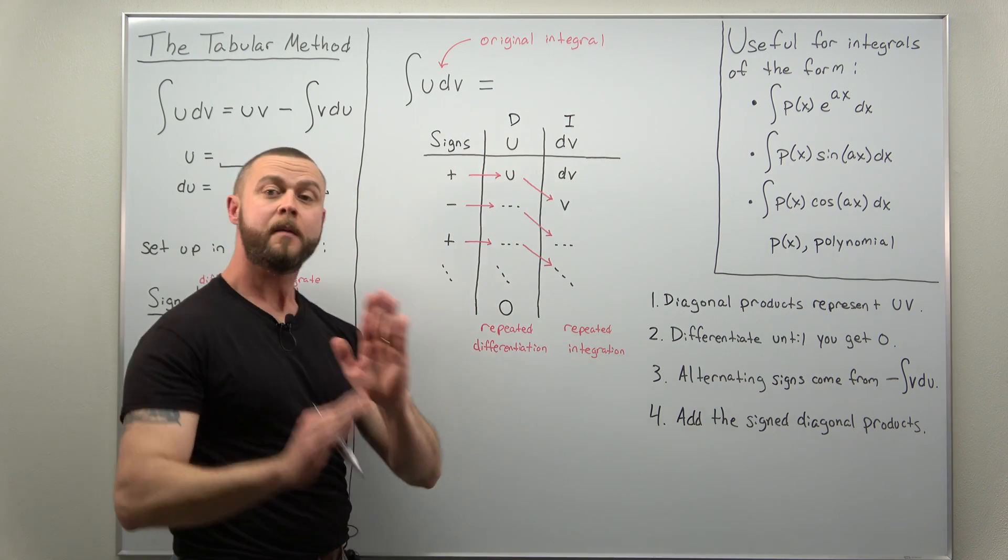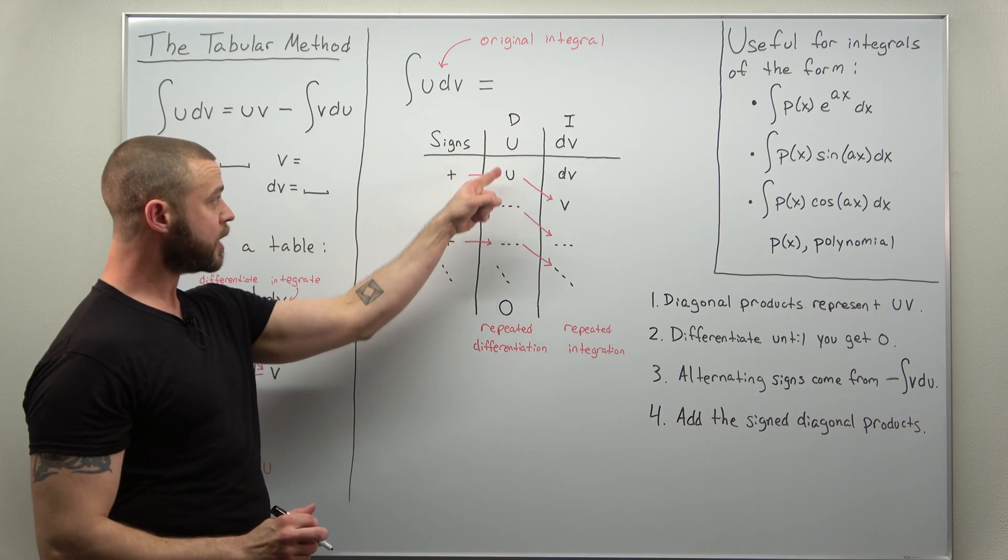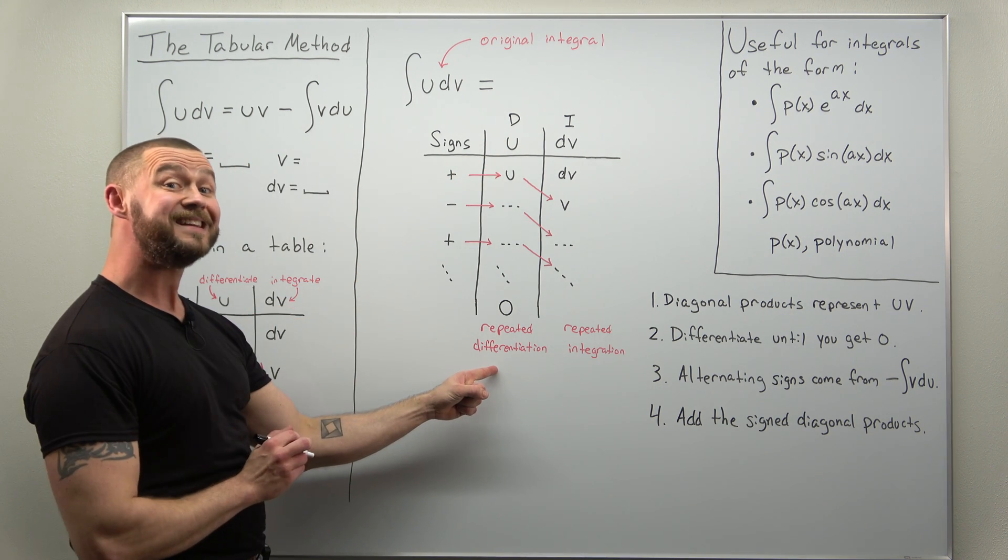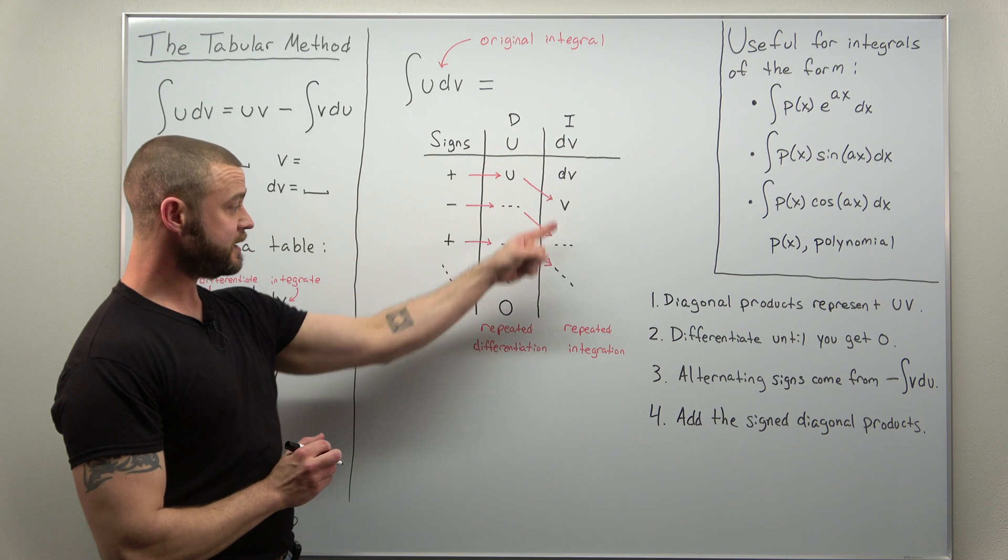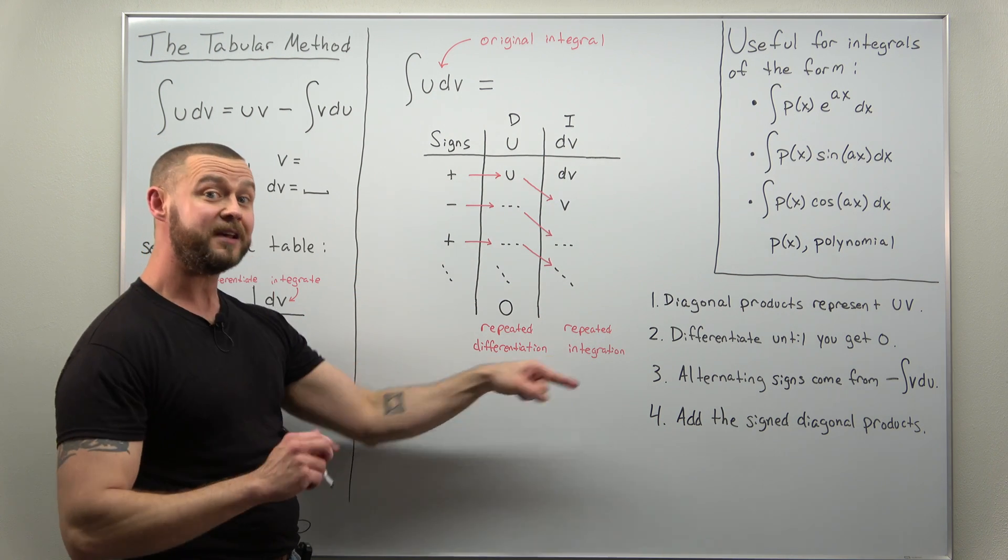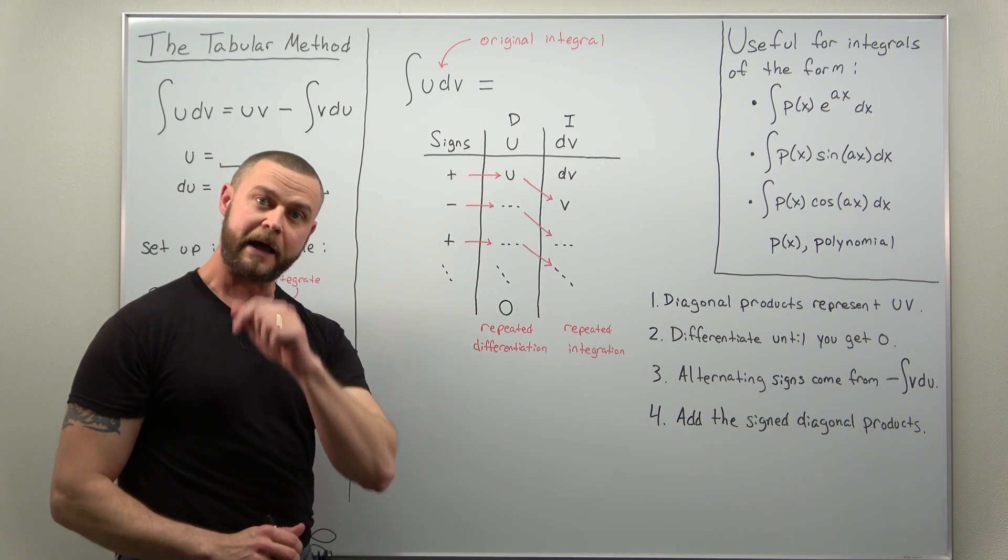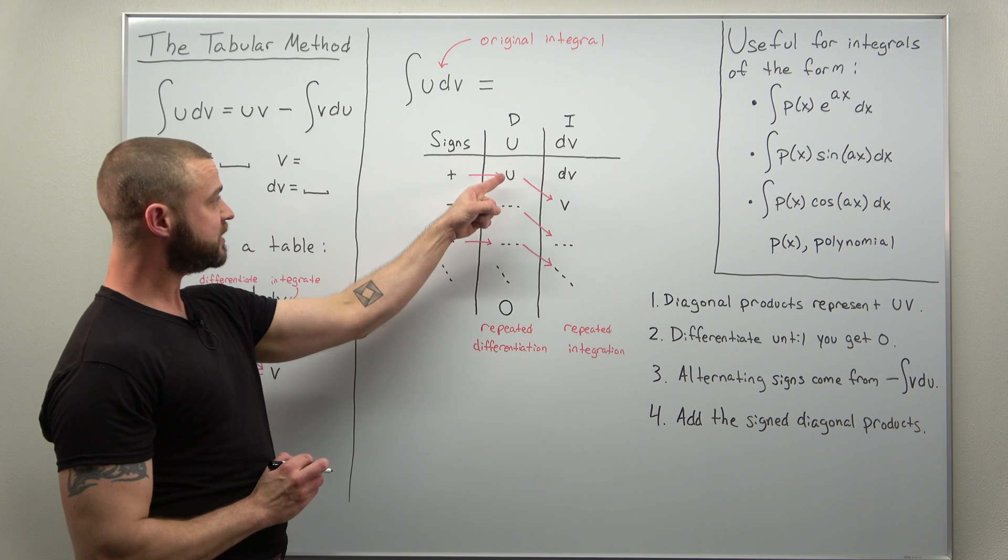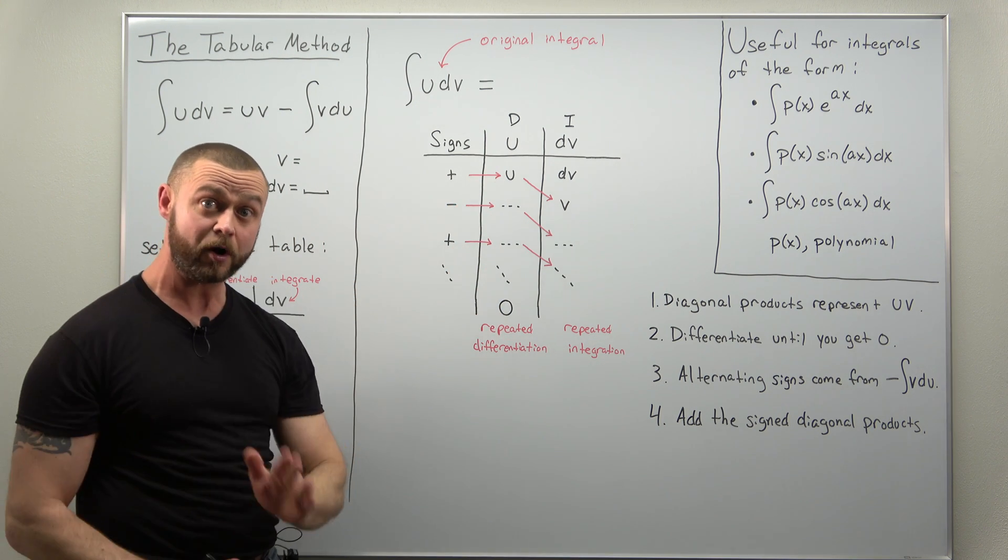Depending on where you learn this, you might see it written like this, but it's all the same. Your u column, you're going to repeatedly differentiate. Your dv column, you repeatedly integrate.